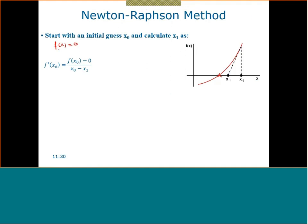I start with an initial guess, x₀. This is my initial guess. I find the corresponding f(x₀). Now my objective is to find the second guess for the iteration. I want to go towards the answer.